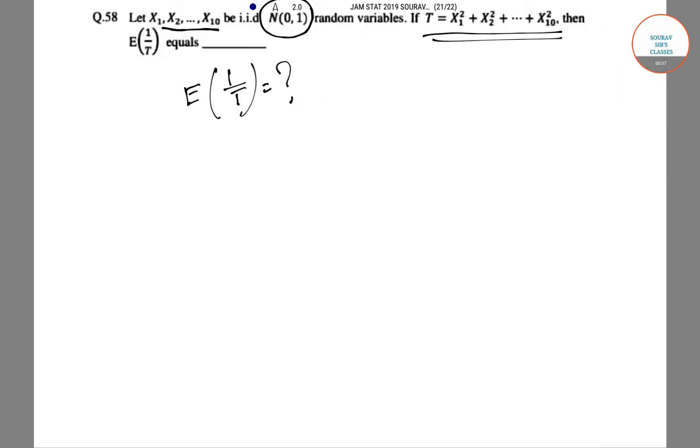So as x1, x2, x3, x4 dot dot x10 follows normal 0,1, x1 square, x2 square, dot dot x10 square will follow chi-square distribution chi-square 1. This is IID independent and identically distributed random variables.